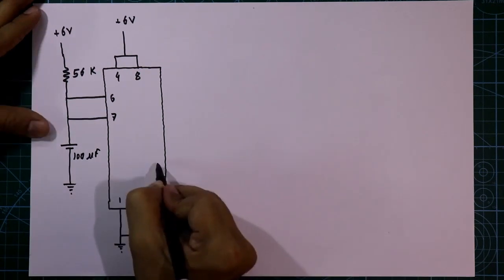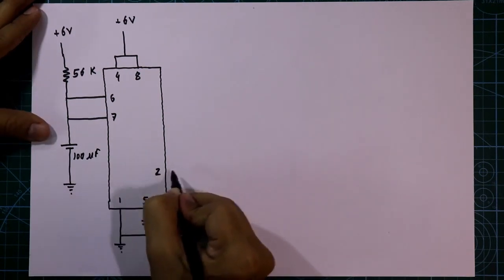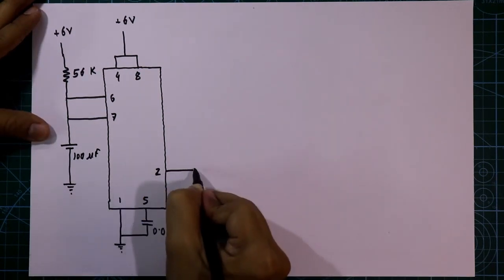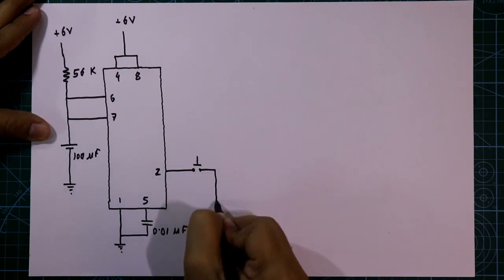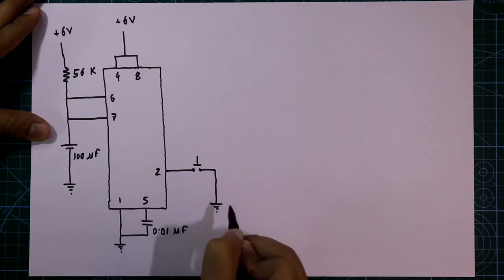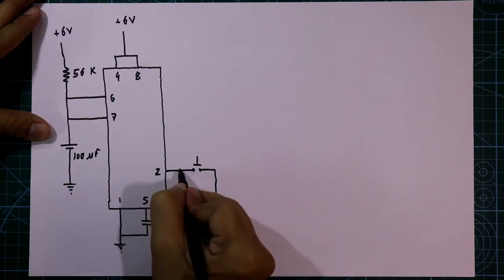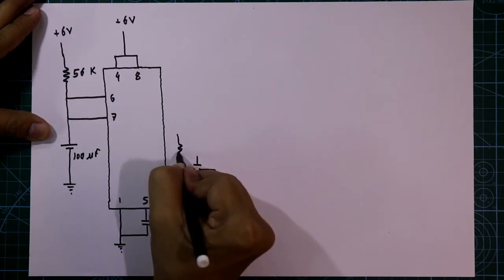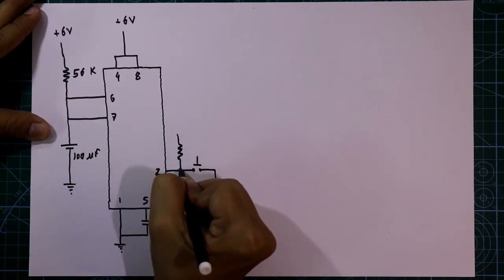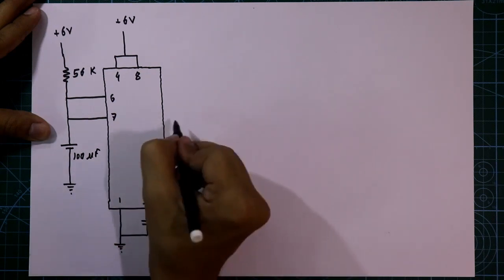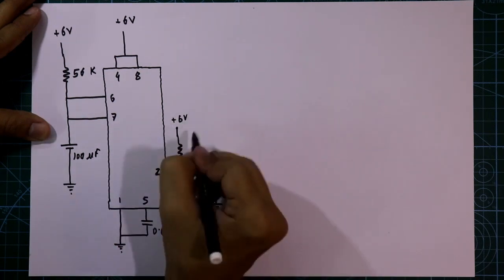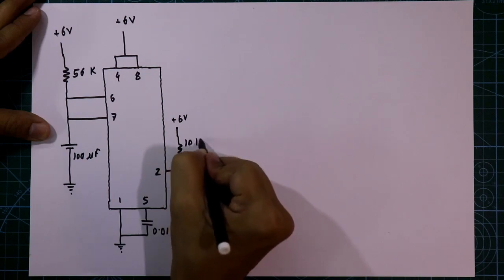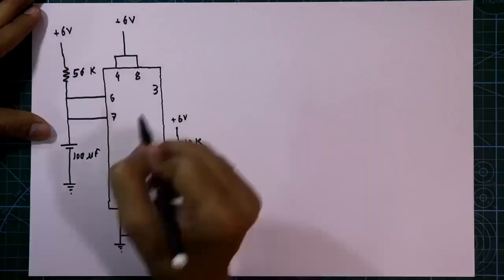Pin number 2 — with pin number 2 we connect one push-to-on switch, and another pin of the switch is connected to ground. With pin number 2 we also connect one resistor, and another pin of that resistor is connected to plus 6 volt. The value of the resistor is 10 kilo ohms.